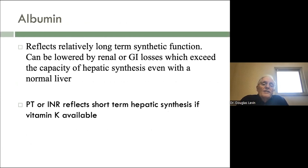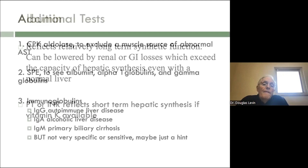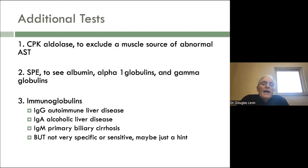Albumin reflects relatively long-term synthetic function and can be lowered by renal or GI losses, or by malnutrition. The prothrombin time or INR reflects short-term hepatic synthesis as long as vitamin K is available. CPK and aldolase are often helpful to exclude a muscle source of abnormal AST — that's one thing you can check with a muscular patient. Aldolase is generally a send-out test, but CK is very easy to get.